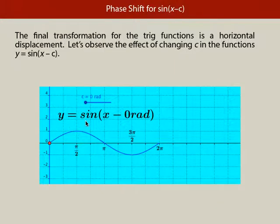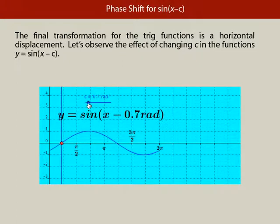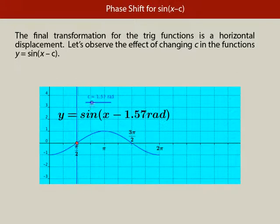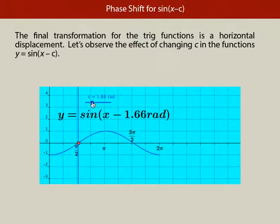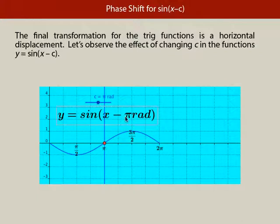I've got the function here: y equals sine of (x minus c). Here c is set to 0 radians, and I can vary c with this slider. We're going to observe what happens to this red dot — it's fixed to the graph as I increase c. See how the graph moves to the right? There's pi over 2 — 1.57 radians — it's just about exactly pi over 2, and you can see it's moved to the right pi over 2. Notice the graph, because of the negative sign, moves to the right.